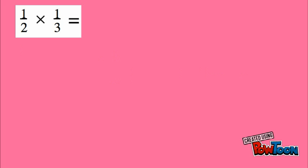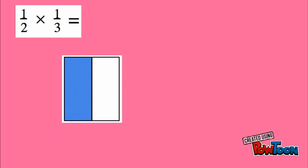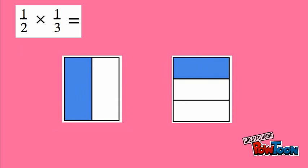So here we have one half times one third. So we'll make a fraction model for one half, and then we're going to make another fraction model for one third. Now notice that they're both going in different directions, up and down, and then the other one is left to right. That's important for making these area models.